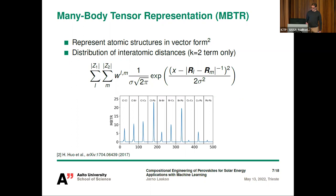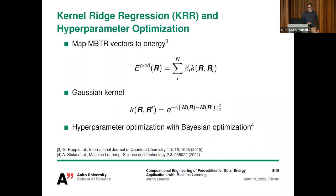The second part of our machine learning model maps the MBTR vectors to energy values using Kernel Ridge Regression (KRR). The kernel function we use is a Gaussian kernel, where the distance between two structures is defined as the Euclidean distance between their MBTR vectors. Both MBTR and KRR have hyperparameters that we optimize with Bayesian optimization.